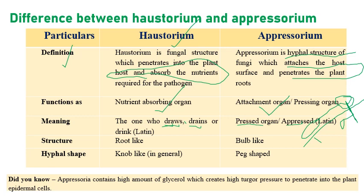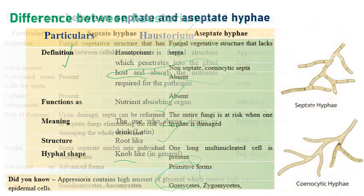The general structure of haustoria is a root-like structure, and its shape is generally knob-shaped. When it comes to appressorium, it is generally a bulb-like, peg-shaped structure. Now, how does appressorium penetrate inside? A leaf surface is very strong, and the spore is very small and minute. Appressorium contains a high amount of glycerol, and that glycerol creates high turgor pressure, which helps penetrate inside the epidermal cells.